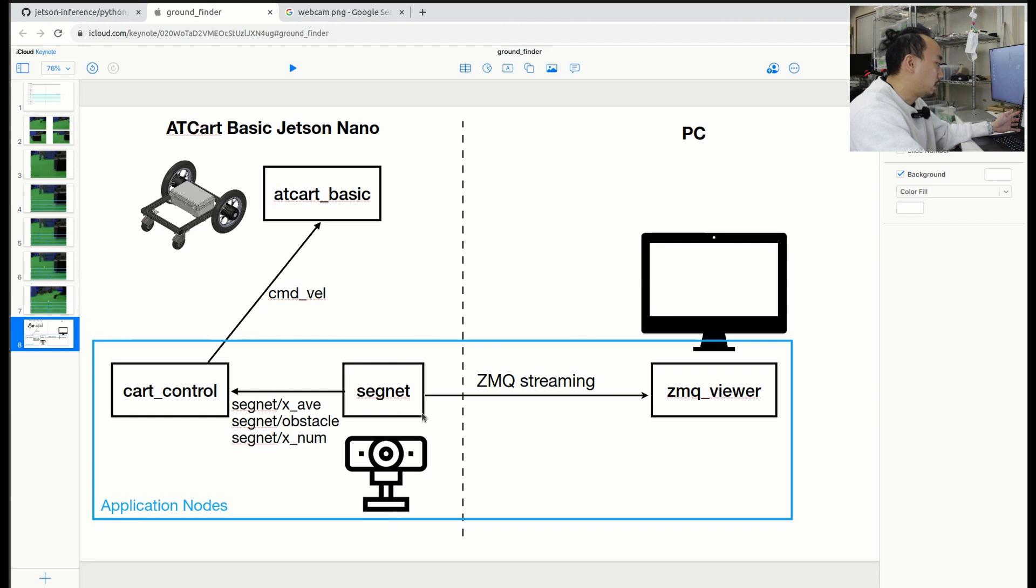At the same time it's going to stream out the mask image. I'm going to run the ZMQ viewer from my PC and then we can see the video streaming in real time. If you want to know about the AT Card Basic node I really recommend you check on my previous video. I will put the link over there.